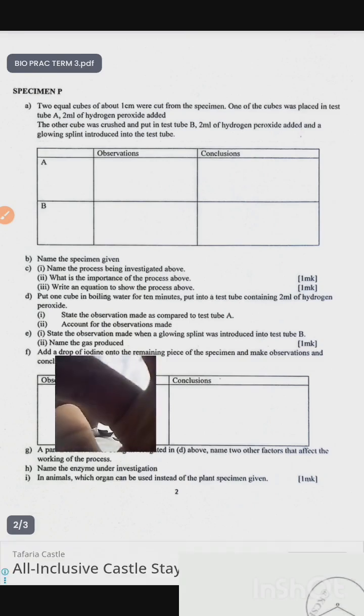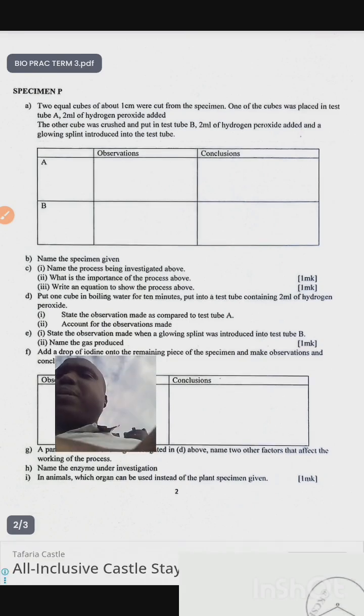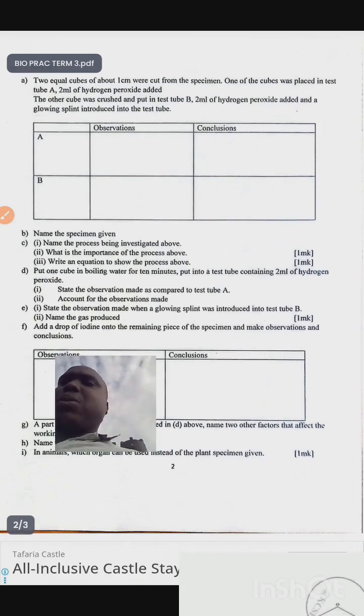You will be provided another specimen, whichever letter will be given to it, specimen K or specimen whatever, then you will be asked: two equal cubes of about one centimeter were cut from the specimen given. One of the cubes was placed in a test tube A, two centimeters or two ml of hydrogen peroxide added. The other cube was crushed and put in a test tube B, two ml of hydrogen peroxide added. A glowing splint introduced into the test tubes. A, write observation and conclusion. B, write observation and the conclusion.